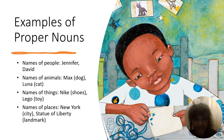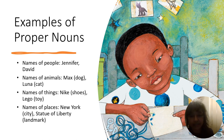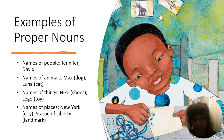Here are some examples of proper nouns. Names of people like Jennifer or David, or whatever your name is. Names of animals like Max, who's a dog, or Luna, who's a cat. Names of things like Nike for shoes or Lego for your toys. Names of places like the city of New York or the Statue of Liberty.